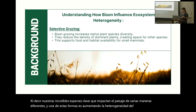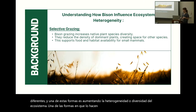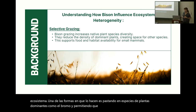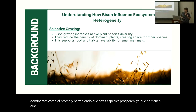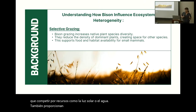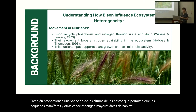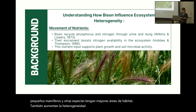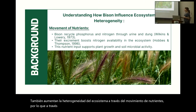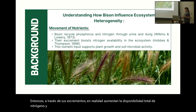One of the ways they do this is by grazing on dominant plant species like brome and allowing other species to thrive as they don't have to compete for resources like sunlight or water. They also provide a variation of grass heights that allow small mammals and other species to have increased habitat areas. They also increase ecosystem heterogeneity through the movement of nutrients — through their excrements they actually increase the total availability of nitrogen and phosphates in the environment, which act as food for plants and soil microbes.